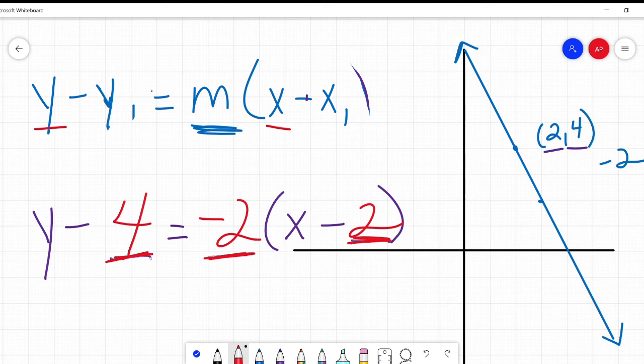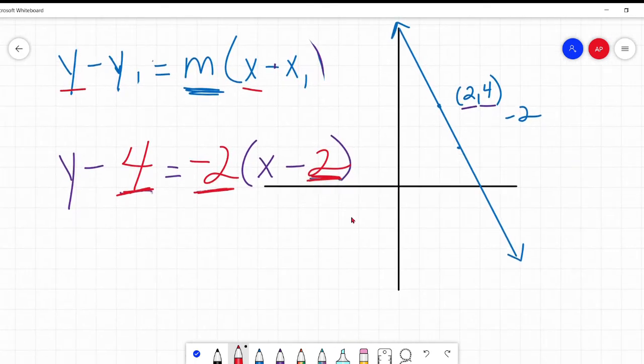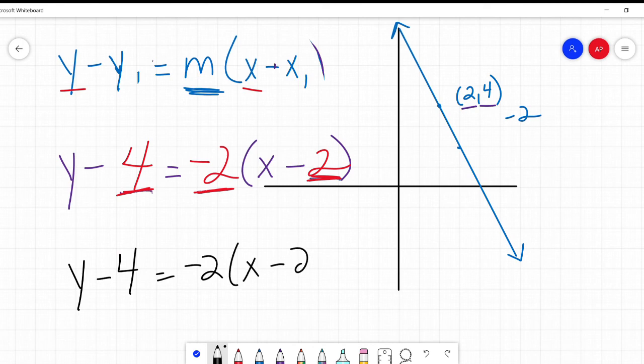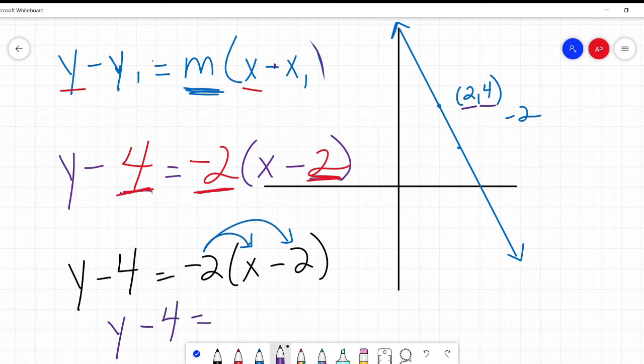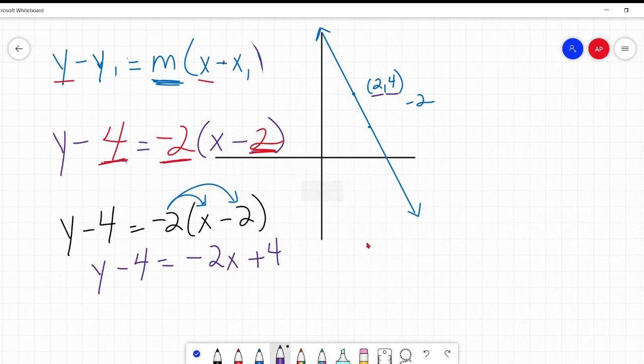Now what happens if I want to put this into y equals mx plus b format? Well, let's do that. So we have y minus four equals negative two times x minus two. First thing I would do is distribute this. And y minus four equals negative two x plus four. And so then my next and last step to get y by itself to be in our y equals mx plus b format, I'm going to add four here to get rid of that and add four to the other side.